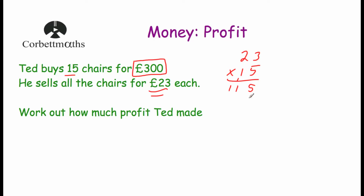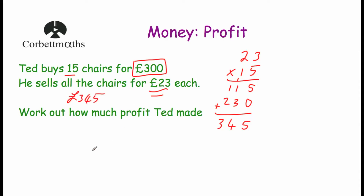Now we're going to multiply 23 by 10. So put our 0 down, 1 times 3 is 3, 1 times 2 is 2. And then if we add them together: 5 plus 0 is 5, 1 plus 3 is 4, and 1 plus 2 is 3. So Ted sold the chairs for £345 in total. But he spent £300. So if we take our £345 and subtract £300, the difference is how much money he made — and he made £45 profit.